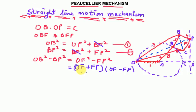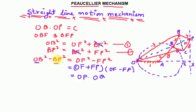We can write OF + FP equals OP, and since BF is the perpendicular bisector, FP equals FQ, so OF − FQ equals OQ. Since OB is a link of the mechanism it is constant, and BP is also a link of the Peaucellier mechanism so it is also constant. Therefore OP × OQ is constant, and hence point P traces a straight path PX which is perpendicular to OE. Proved.